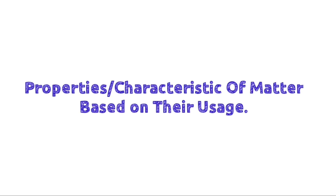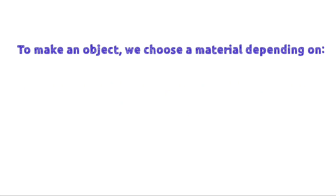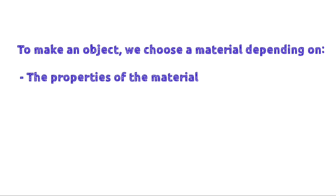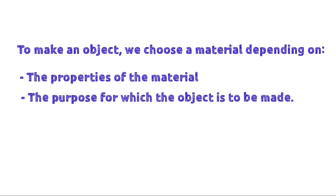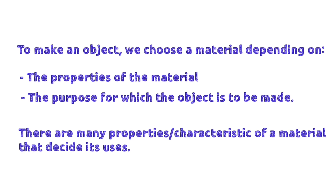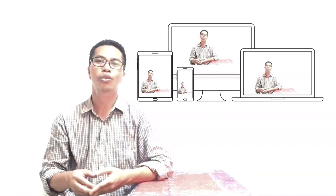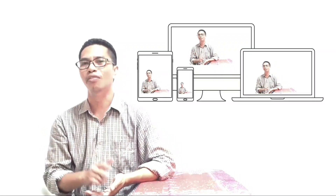To make an object, we choose a material depending on the properties of the material and the purpose for which the object is to be made. There are many properties or characteristics of a material that decide its uses. For example, the gadget that you use to watch this video is made of some materials according to its purpose.